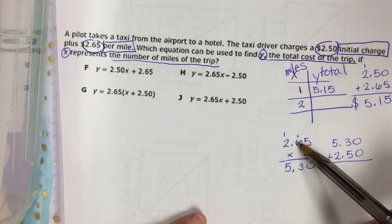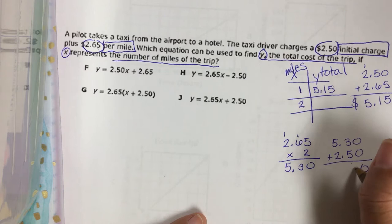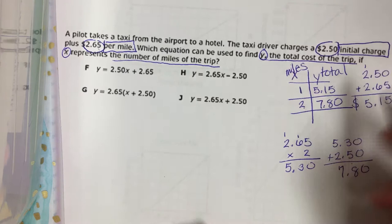Again, two miles at $2.65 a mile plus the $2.50 initial charge. So he's gonna charge me $7.80 to travel two miles.